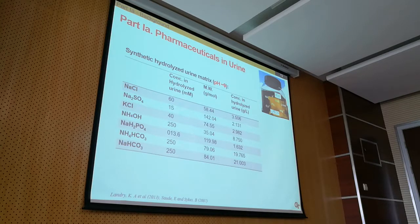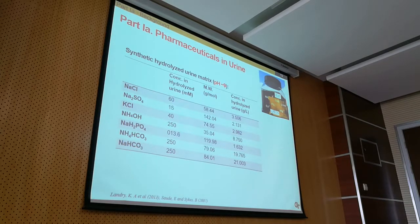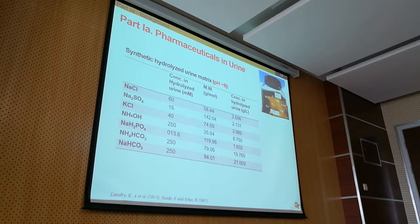Why do we want to degrade pharmaceuticals in urine? Most pharmaceuticals in the environment come from human excretion — when you take medicines, most drugs are excreted in urine or feces, they enter municipal wastewater, are not removed effectively at the treatment plant, and end up in surface water. Although urine contributes only about 1% of the volume of municipal wastewater, it contributes 60% to more than 90% of pharmaceuticals to municipal wastewater.